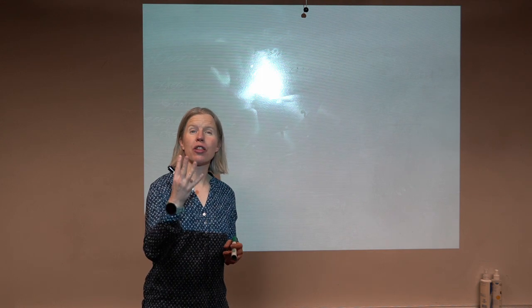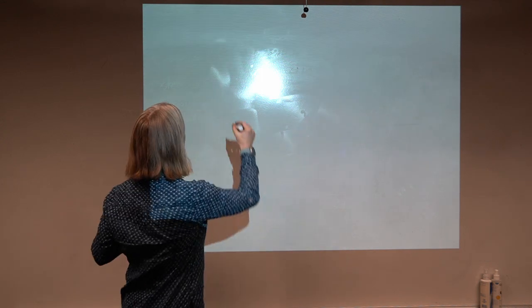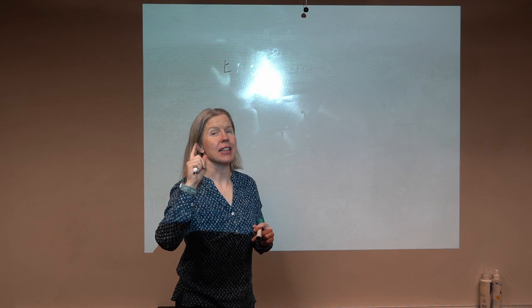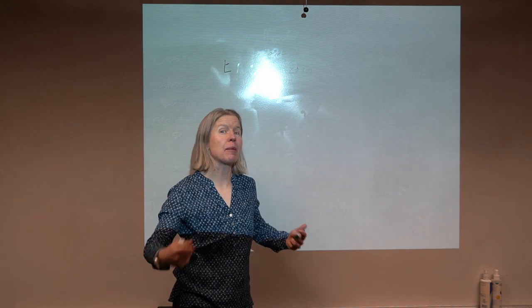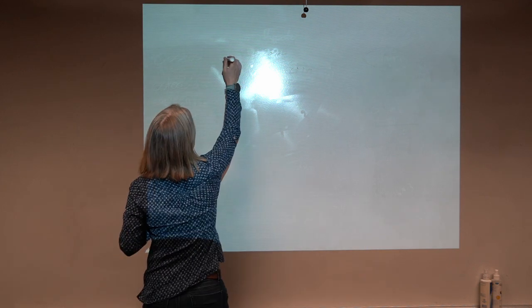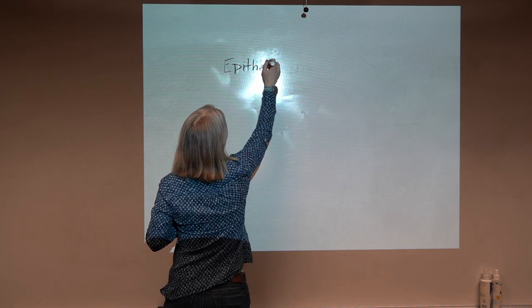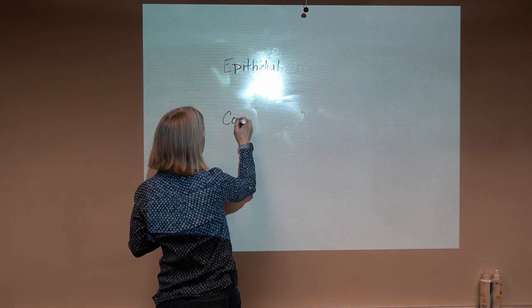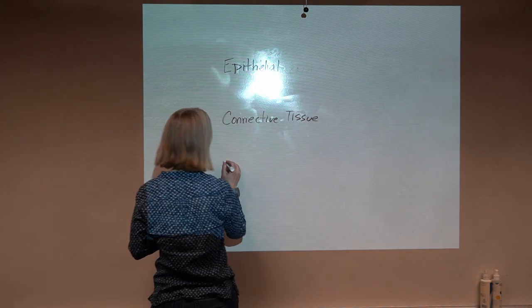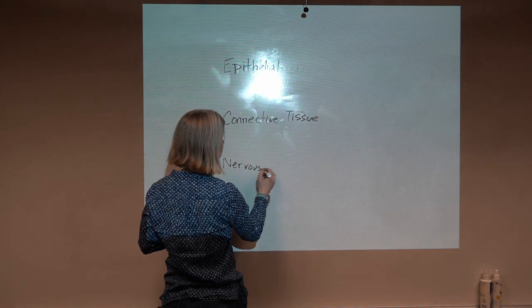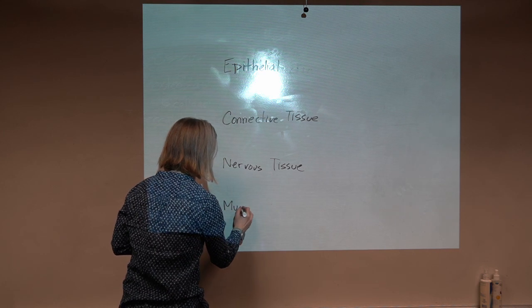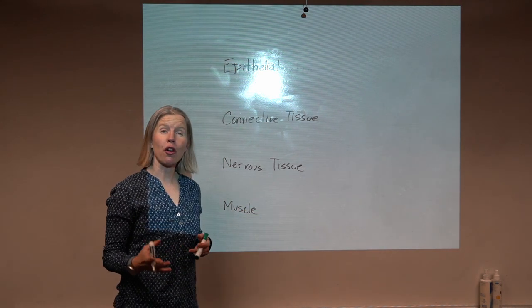We're going to start with the four main tissue types. Those were epithelial, connective tissue, nervous tissue, and muscle. So those are our four main groups.